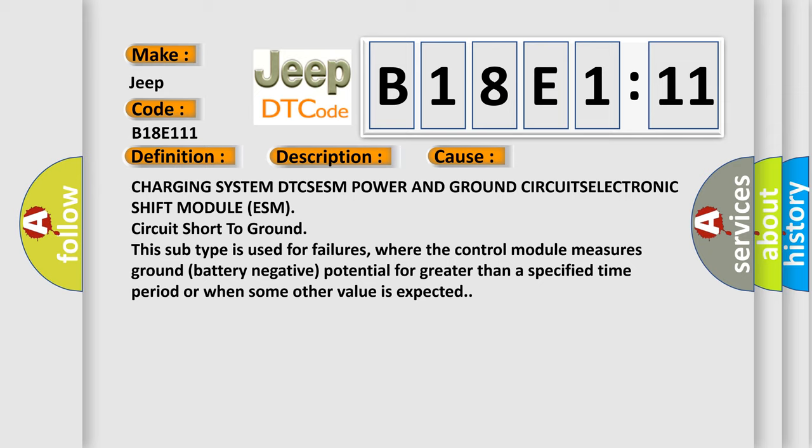This subtype is used for failures where the control module measures ground battery negative potential for greater than a specified time period or when some other value is expected.